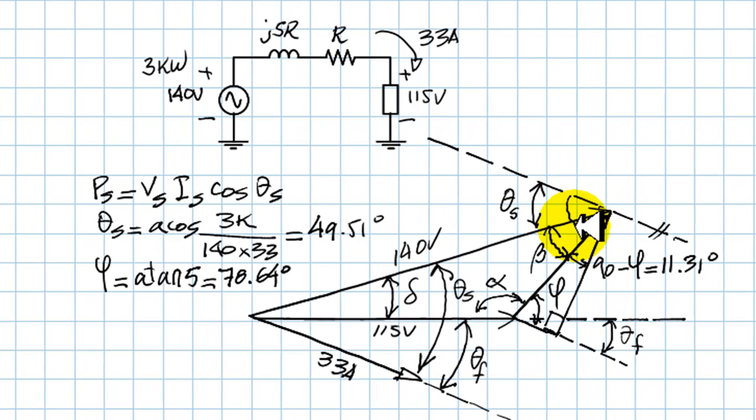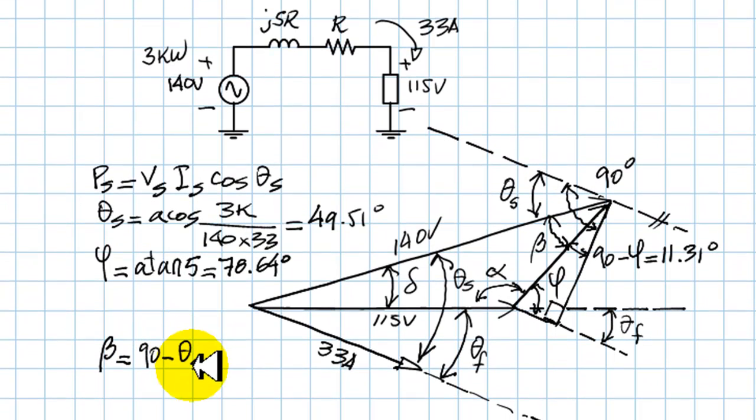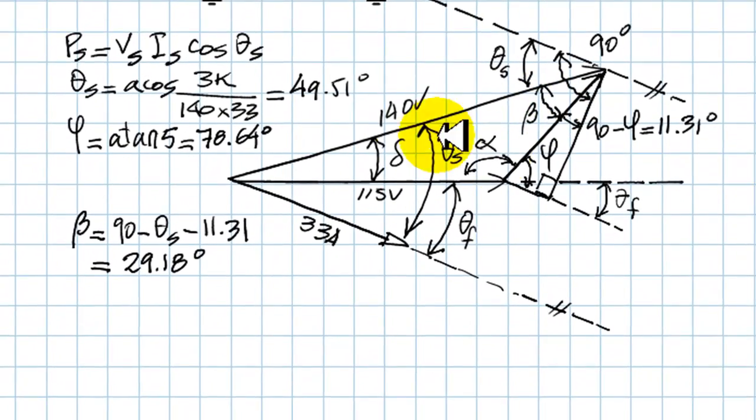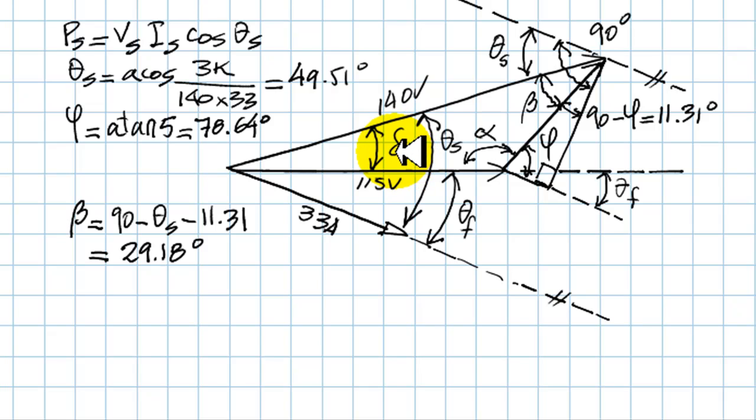Check it out. This angle here is 90 degrees. It's a right angle because this side is perpendicular to the current. That's why this is 90. So beta is 90 minus theta s minus 11.31. That is 29.18 degrees. Bingo! So now we have three elements in our triangle, 115V on this side, 140 on this side, and this angle, which is 29.18. We can solve the triangle. We can use sine law several times until we find delta.